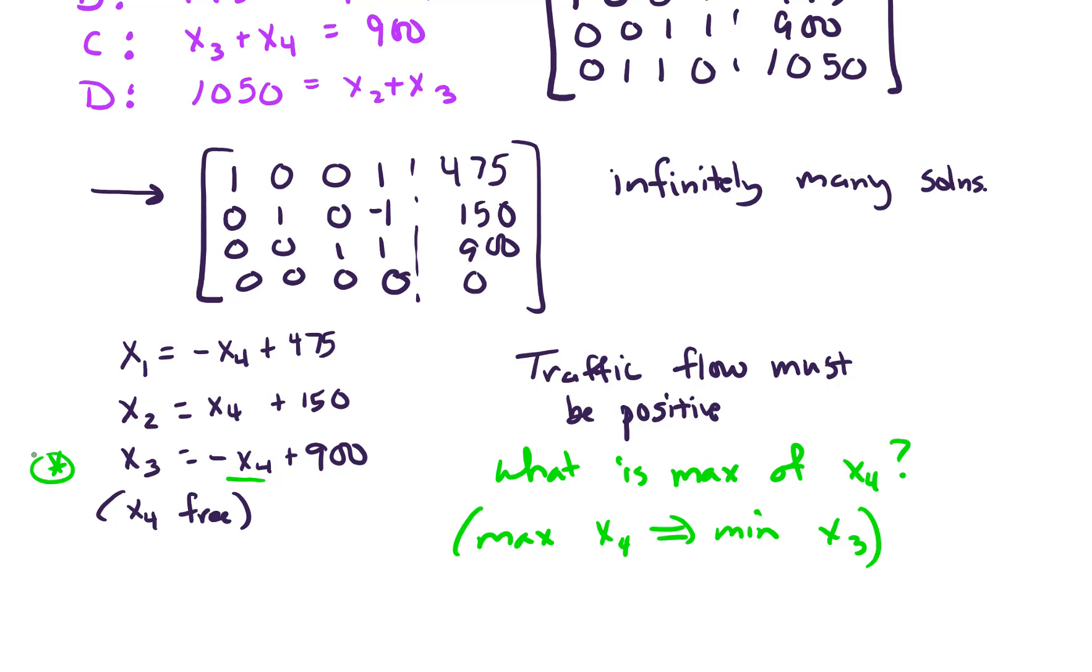All right, so now we're looking at what's the maximum of X4. Well, the maximum of X4, if we look at these first two equations, the maximum that X4 could take on without causing either of these other equations to be zero. The maximum for X4, that would be 475. Because if X4 were any bigger, then X1 would be negative.